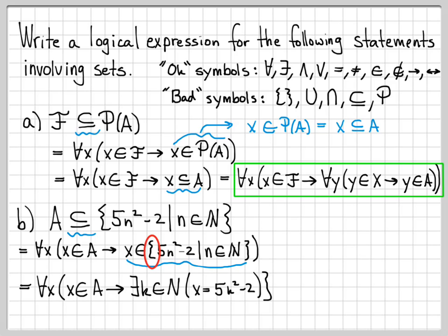So this lets us get rid of these bad symbols here and replace it with this logically equivalent statement. And we are done. At this point, we have all the good symbols in, and we have gotten rid of our subsets and curly brackets, and we have a logically equivalent statement that we like.